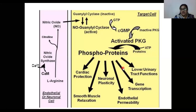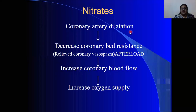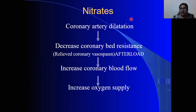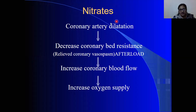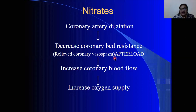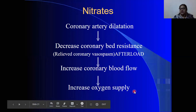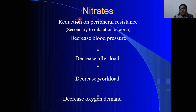The main target of nitrates is vasodilation — dilating blood vessels, both arteries and veins. Starting with coronary artery dilation: the arteries on top of the heart dilate, resulting in decreased coronary bed resistance, decreased afterload, and increased coronary blood flow, which eventually increases blood supply. Nitrates also reduce peripheral resistance as the arteries dilate.